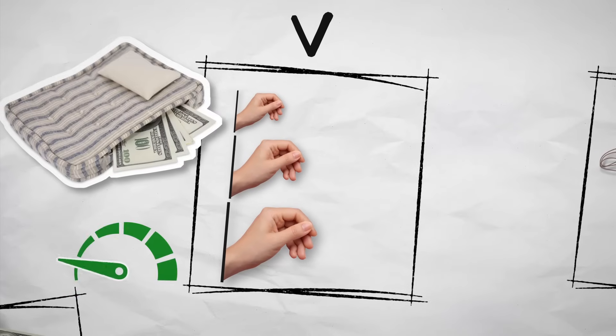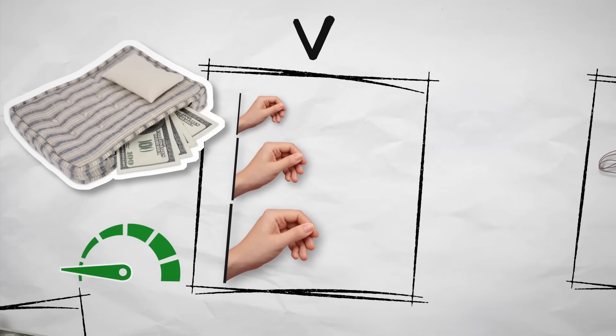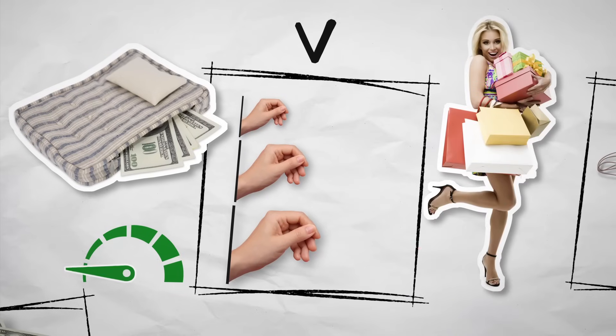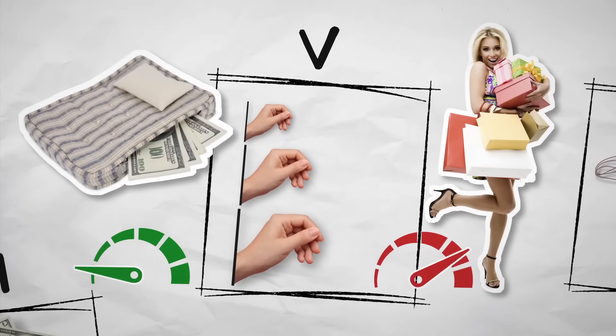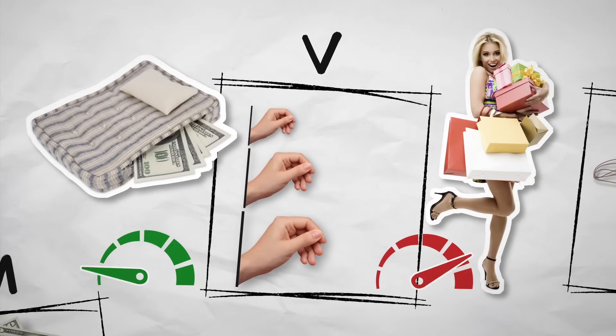Some people hoard cash under their mattress, so their dollars have a low velocity. While others spend or invest their money quickly, and their dollars have a high velocity. V is the number of times the average dollar is spent.